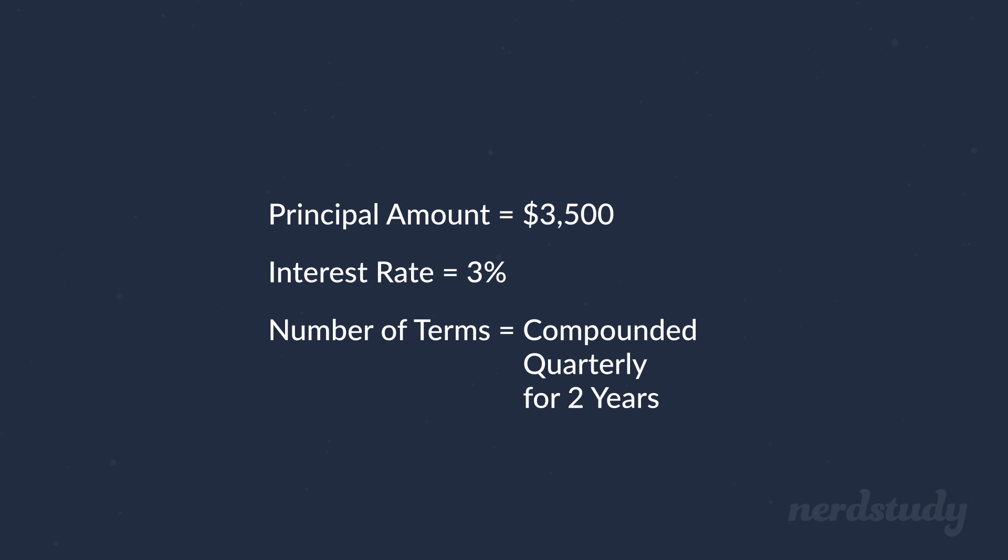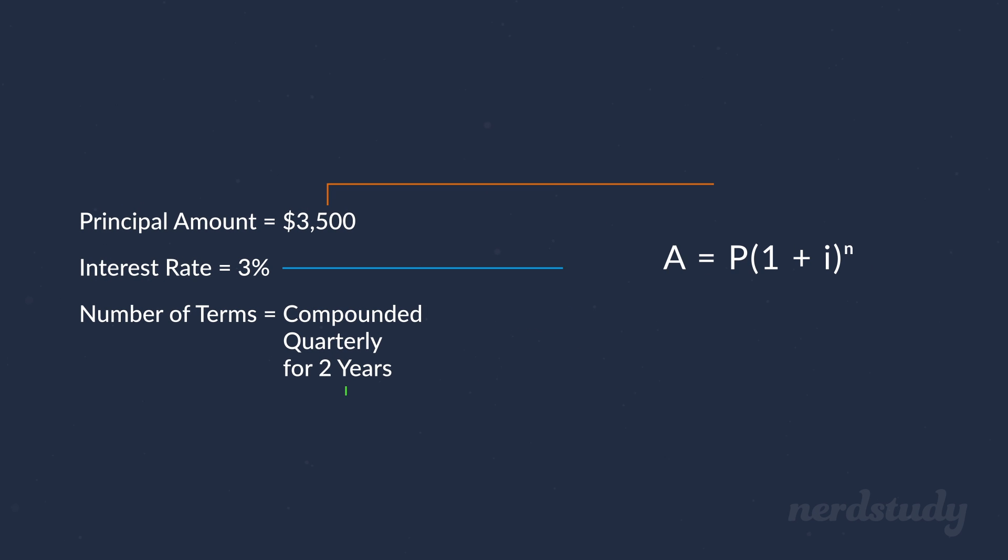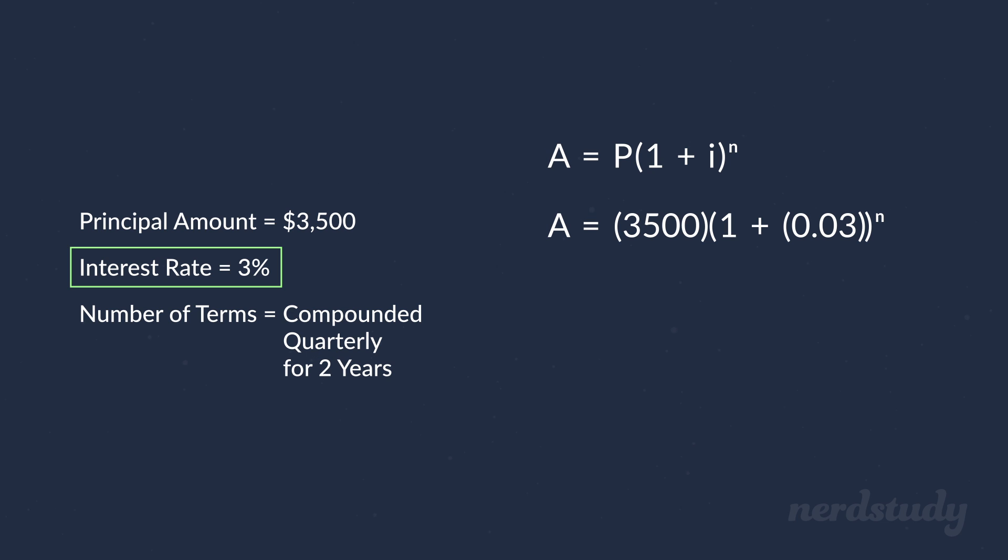Well, all we need to do is pull up our formula and plug in our values. So the principal amount is $3,500. The interest rate is 3%, which we plug in as 0.03, since it's a percentage. Now, our interest rate is being compounded quarterly for 2 years. So, what value would we have to plug in for our N here?